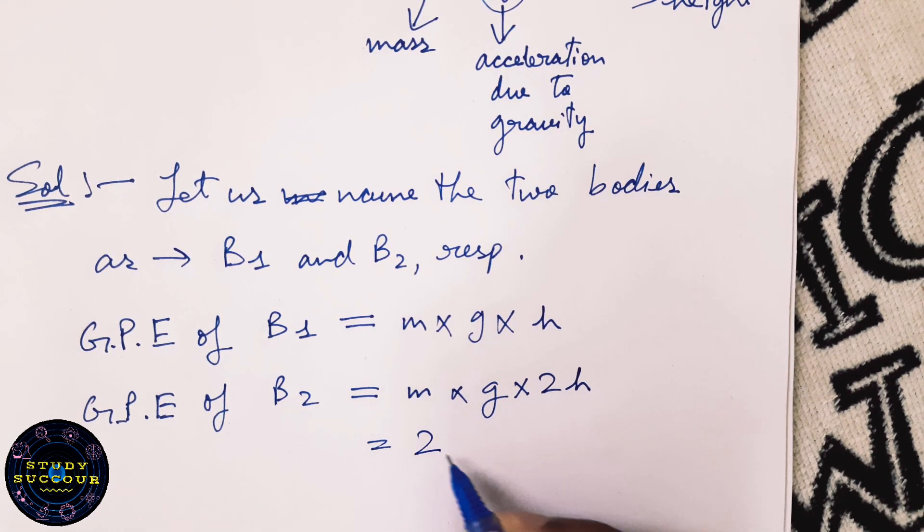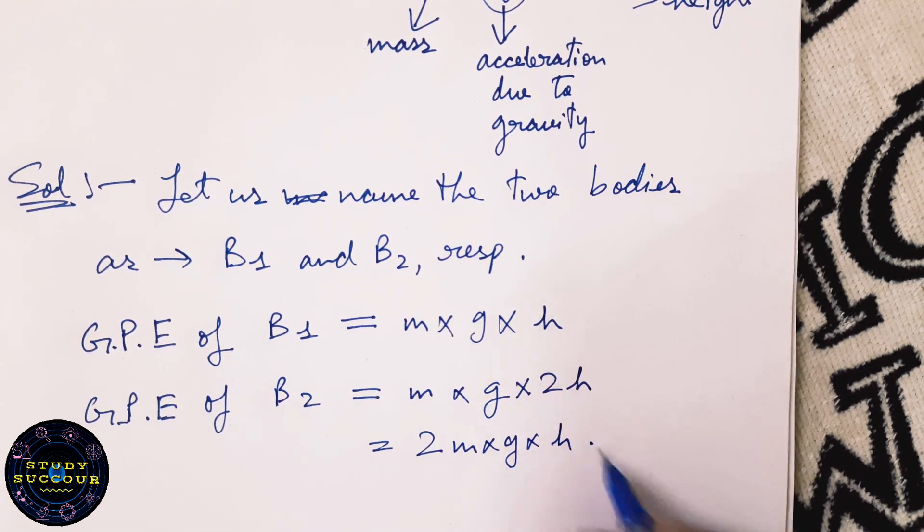So, we can write it as 2M into G into H for B2.